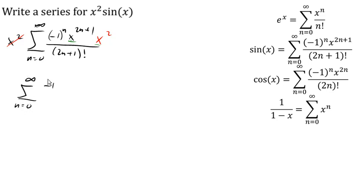Well, I have negative 1 to the n, x to the, so we're gonna add our exponents here, 2n plus 3 over 2n plus 1 factorial, and there is a series for x squared sine x.